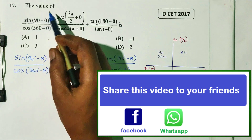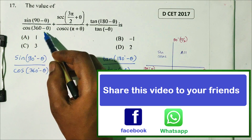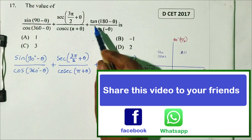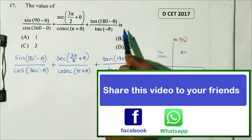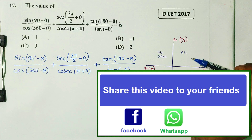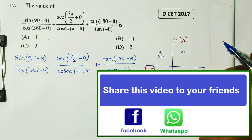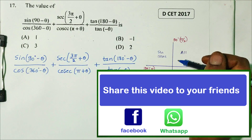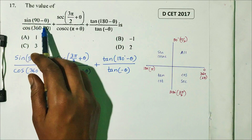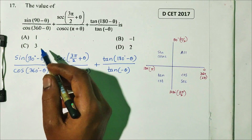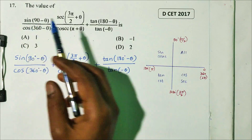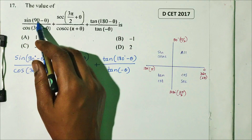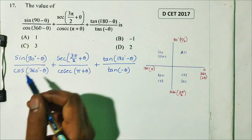Question number 17. The value of sin(90°−θ)/cos(360°−θ) plus sec(3π/2+θ)/cosec(π+θ) plus tan(180°−θ)/tan(−θ). This question is DCT 2017. First, we apply standard angle transformation rules. sin(90°−θ) is positive, giving cosθ.